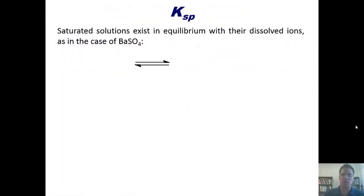Saturated solutions exist in equilibrium with their dissolved ions, as in the case of barium sulfate. This example right here. You can see that barium sulfate, a solid, is in equilibrium with its individual ions, barium cation and sulfate anion, that are in aqueous states.